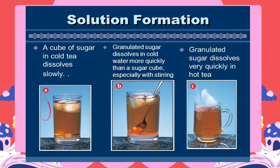A cup of sugar in cold tea or water dissolves slowly, because the particles move slower and interact at a slower rate. Therefore, a sugar cube will dissolve the slowest in cold tea or water. Granulated sugar dissolves in cold water more quickly than a sugar cube, especially with stirring.